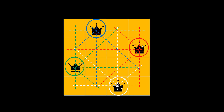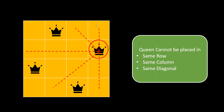The first thing that comes to mind is: what are the conditions that we can apply to choose a safe position? A queen cannot be placed in the same row, same column, or same diagonal. If we take this particular queen, no queen should come in the same row it is in, the same column it is in, or in any of the diagonal cells for this queen. And if you see over here, all the conditions are satisfied, so this is a safe position for this particular queen.